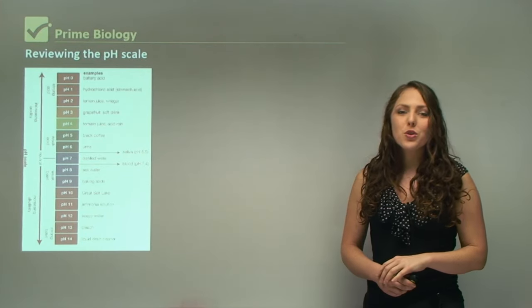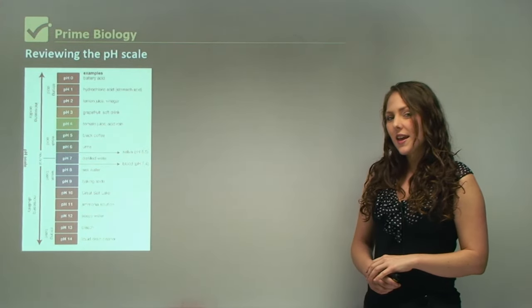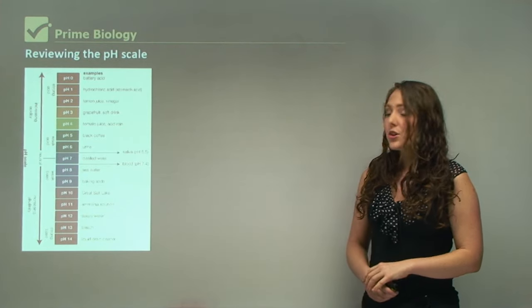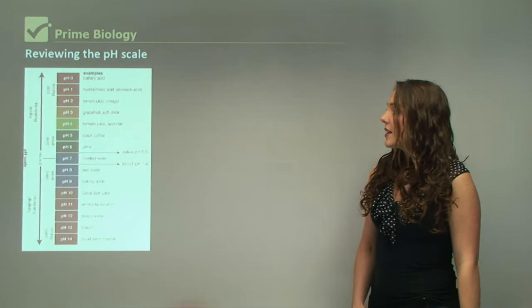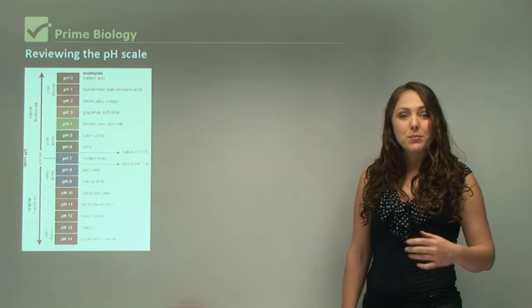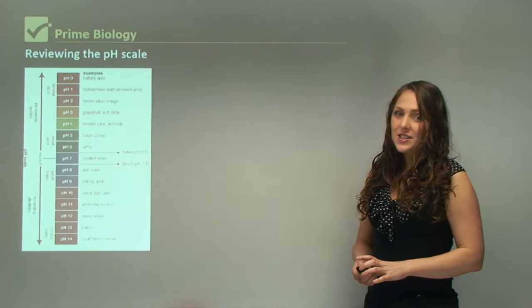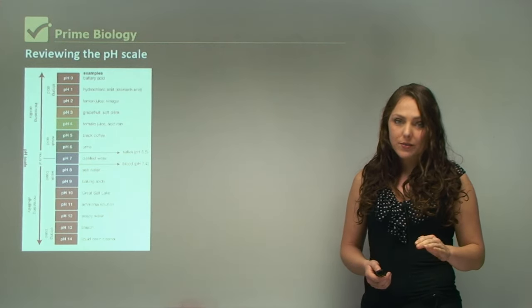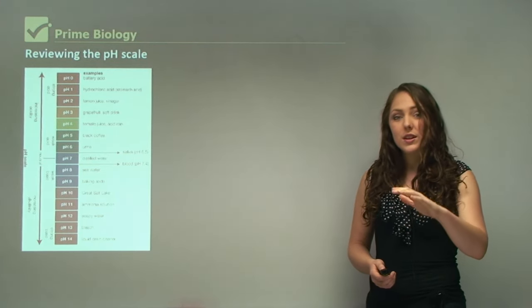At pH 2, and remember there's 10 levels between each, we've got lemon juice and vinegar. These are safe for consumption, 10 levels up from hydrochloric acid, but we would not consume that in large amounts. At pH 3, grapefruit and soft drink. pH 4, tomato juice and acid rain. pH 5, black coffee. pH 6, urine. And at pH 7, water.